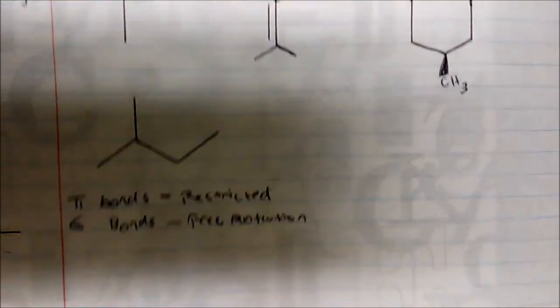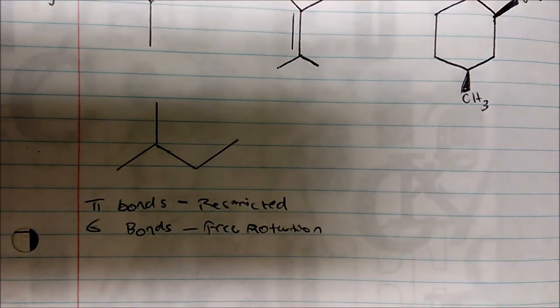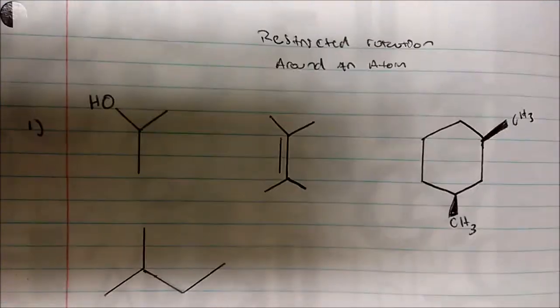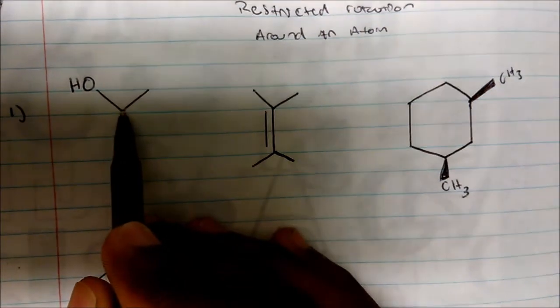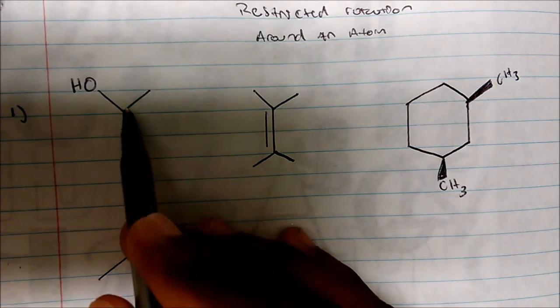So essentially what you're looking for in these problems is just some sort of double bond. If on an exam you were given something of this nature, you're given four molecules and they may ask you to circle the compound that has restricted rotation around a carbon atom. Well, if I look at all these carbon atoms here, I have free rotation.